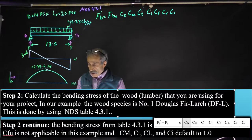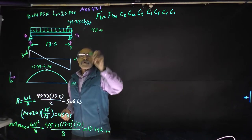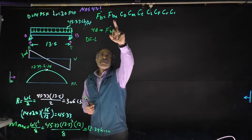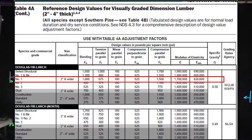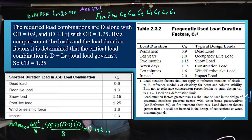Let's calculate FBX from table 4a. We find the right species and commercial grade — we're looking for DFL, Douglas Fir-Larch, number 1. From the table, FBX comes out to 1,000 psi. Our CD comes out to 1.25, based on the roof live load combination. CM is 1 — no moisture issue. CT is 1 — no temperature issue. CL is 1 — lateral stability is not an issue since plywood covers and connects the roof.